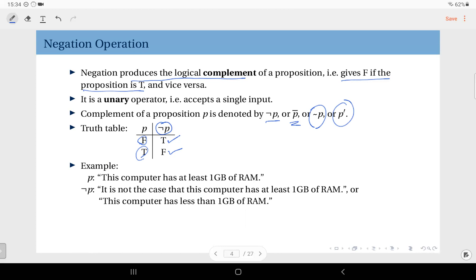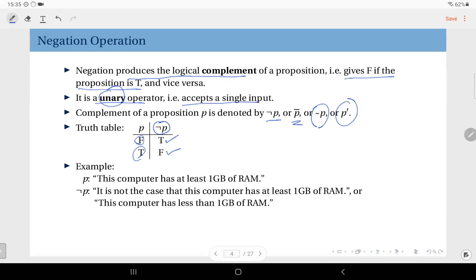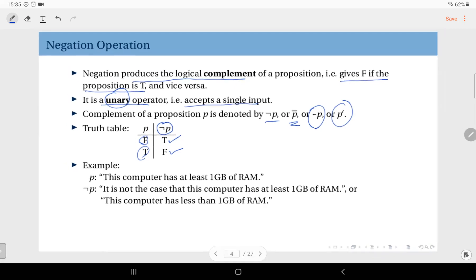One important point is that negation is a unary operator, and this is a term you need to get accustomed to: unary operator, binary operator, ternary operator, etc. The number of inputs that the operation requires is given in this term, unary. That means negation requires only one input. You cannot actually put in two inputs to negation. It doesn't make sense. It accepts a single input, so it's a unary operator.